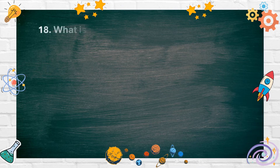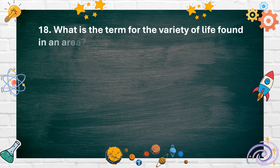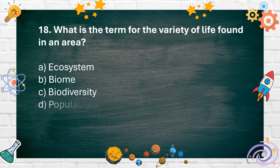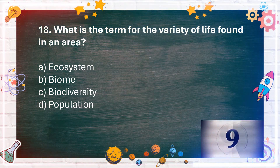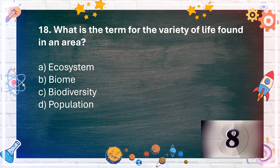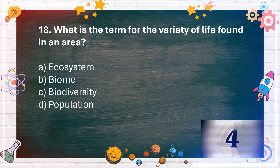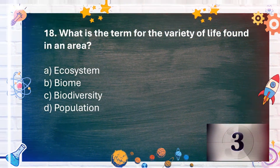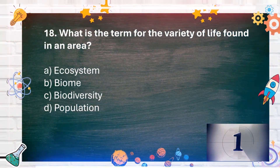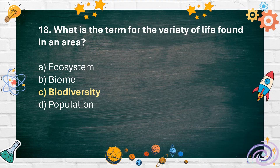Number 18. What is the term for the variety of life found in an area? A. Ecosystem. B. Biome. C. Biodiversity. D. Population. The answer is C. Biodiversity.